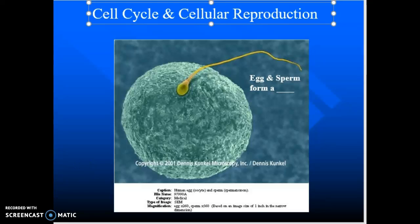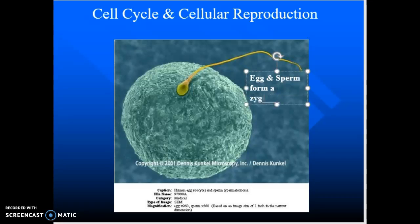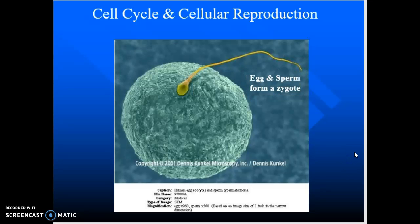We're going to start talking about the cell cycle and cell reproduction — this is the beginning of our genetics unit. In order for humans, animals, plants, and lots of organisms to be here, we started at the time of an egg and a sperm getting together to form a structure called a zygote. The zygote is the combination of one egg and one sperm — half of our genetic material comes from the egg, half from the sperm.